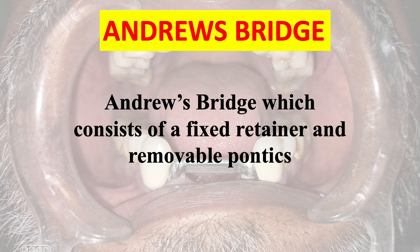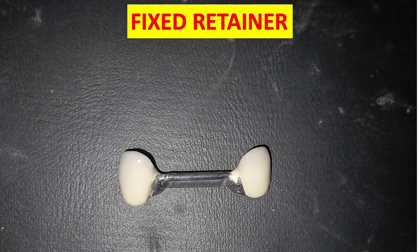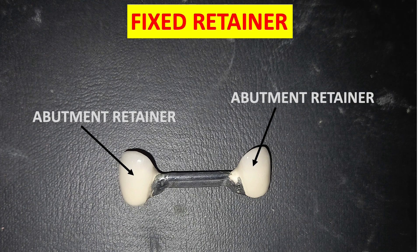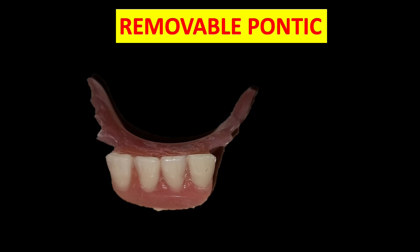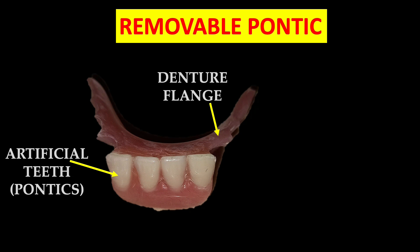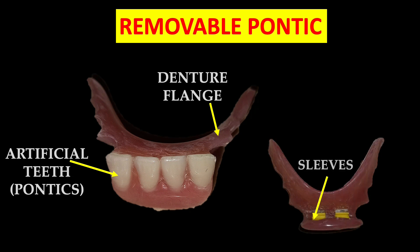In Andrew's Bridge, the abutment retainer is connected with the help of a bar — this is the fixed part. The removable pontic is similar to a conventional RPD. It consists of a denture flange and artificial teeth, and on its tissue surface we have sleeves which are fixed over the bar after pickup.